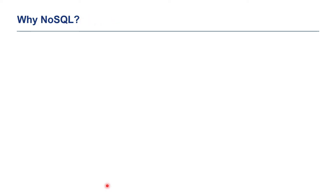Now, thinking about the benefits of going for NoSQL: there is no need to design the schema prior to starting application development. You can do it in parallel while requirements are getting developed. Dynamic data types mean that, as with the key-value pair format — MongoDB has JSON format — you can have any kind of key or any kind of value. There is no restriction, so you can define any kind of data type when handling that data.